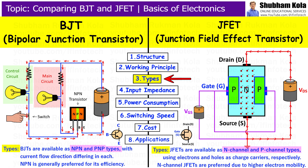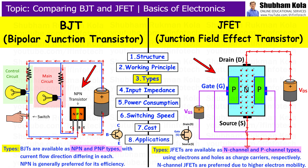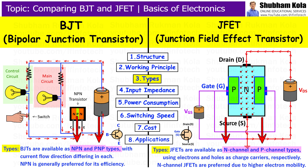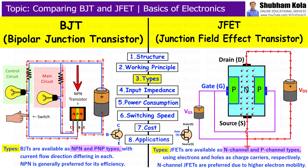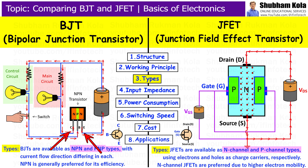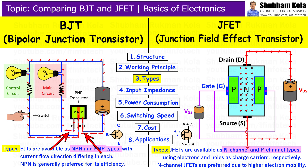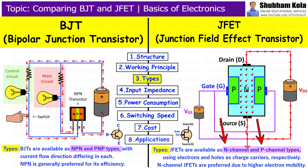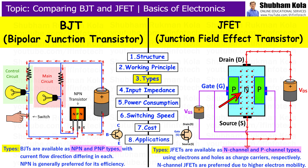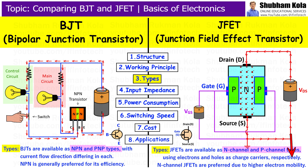Next is Types. BJT and JFET each have two main types. BJT is available in NPN and PNP. In NPN BJTs, current flows from the collector to the emitter, while in PNP BJTs the flow is reversed. JFET comes in two types: N-Channel and P-Channel. N-Channel JFETs are more commonly used because electrons, which are the charge carriers in N-Channel, have higher mobility than holes, which are the charge carriers in P-Channel.